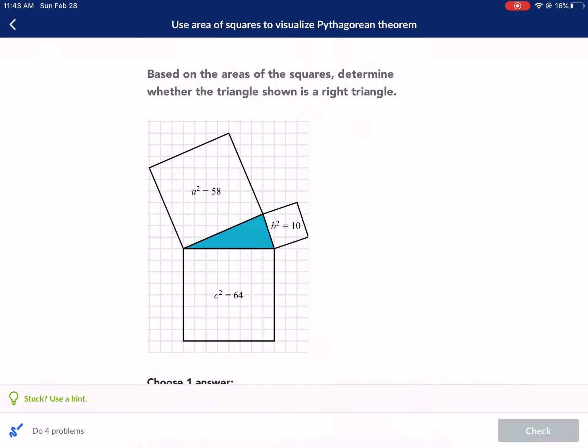Welcome to West Explains Best. Today we're doing a Khan Academy tutorial on use area of squares to visualize Pythagorean theorem. This is a really good exercise to begin understanding what this theorem is and how to use it properly. Let's go ahead and start.